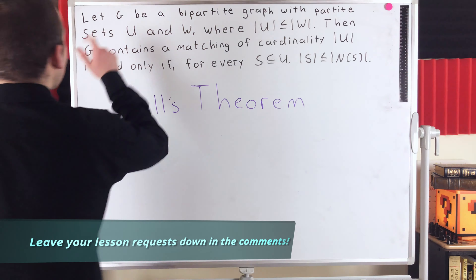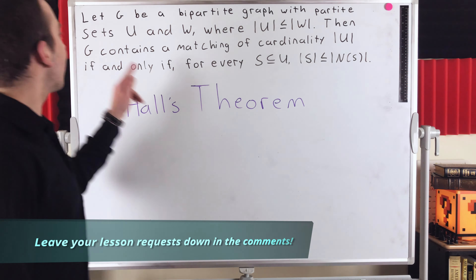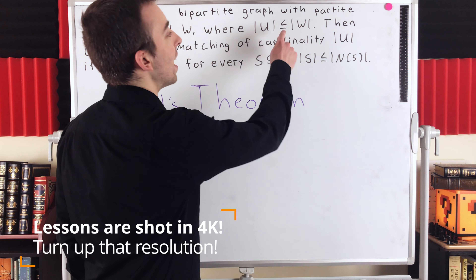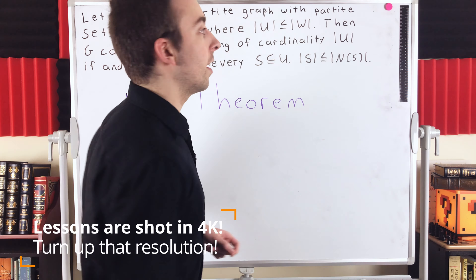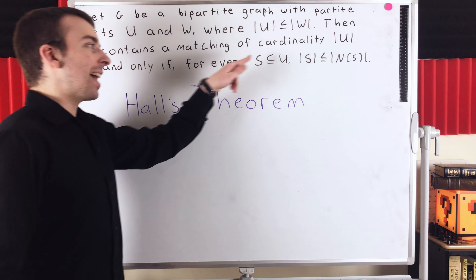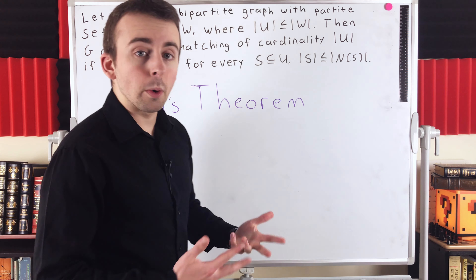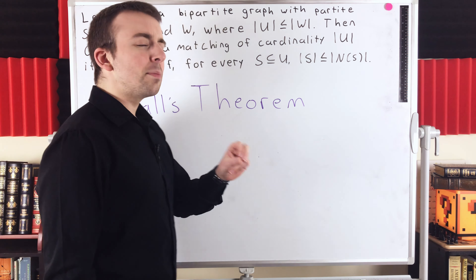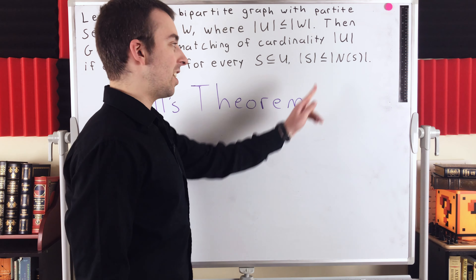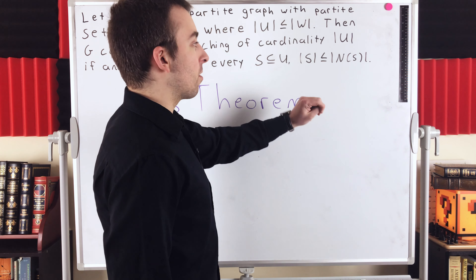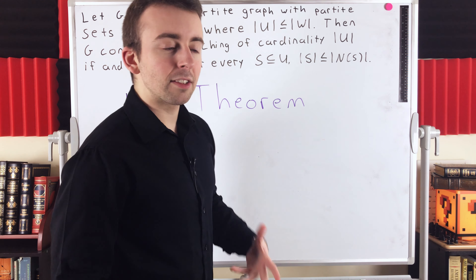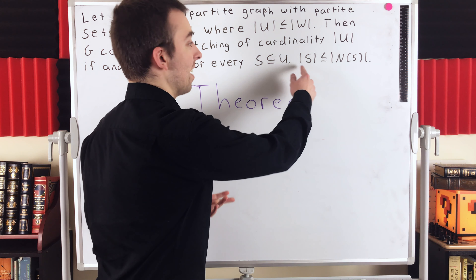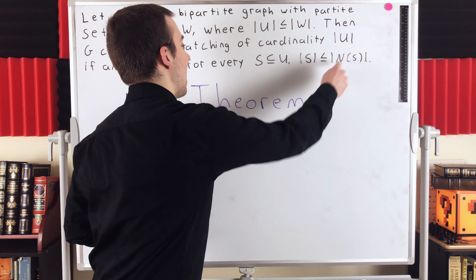Let's quickly read the theorem. Let G be a bipartite graph with partite sets U and W, where U is the smaller partite set — so U has as many or fewer vertices than W. Then G contains a matching of cardinality |U|, a matching that covers the smaller partite set U, if and only if for every subset S of U, the cardinality of S is less than or equal to the cardinality of the neighborhood of S, which is the set of all vertices adjacent to vertices of S. So S has as many or fewer vertices than it has neighbors.